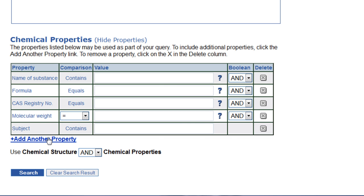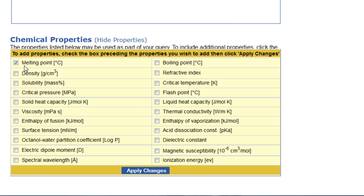Click on add another property to display more properties that can be used in your search. For instance, melting point and boiling point. Check the boxes next to the ones you would like to add and then click on apply changes.